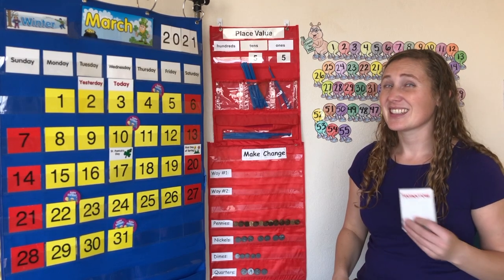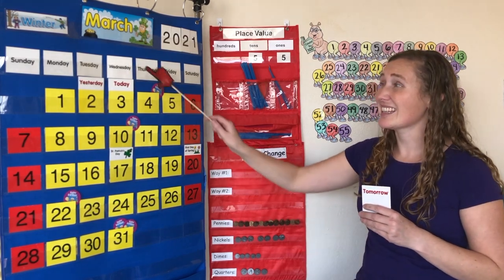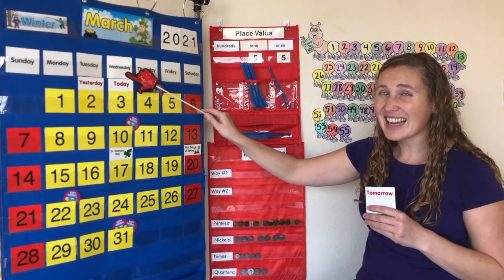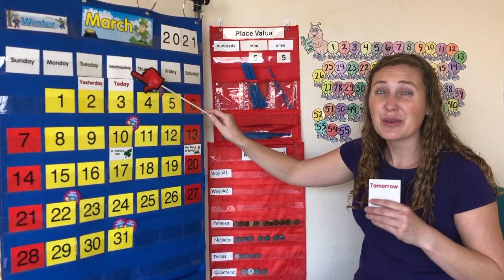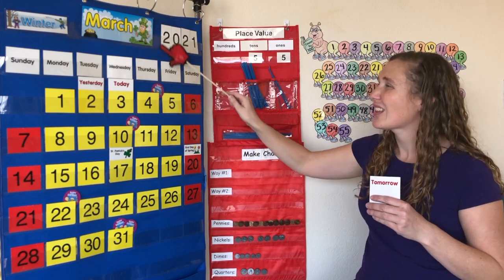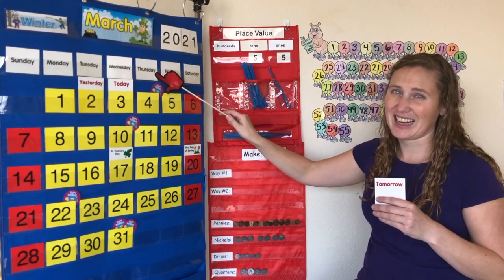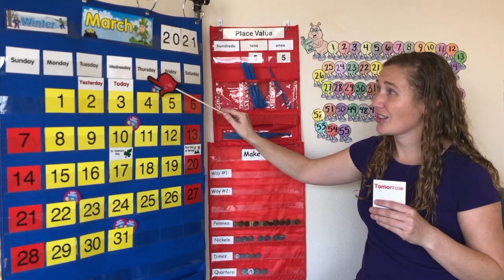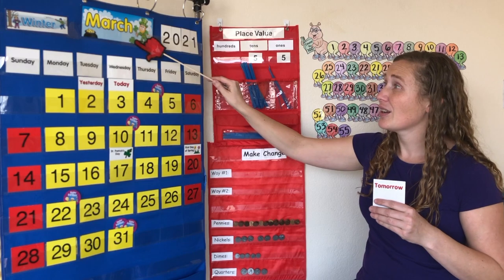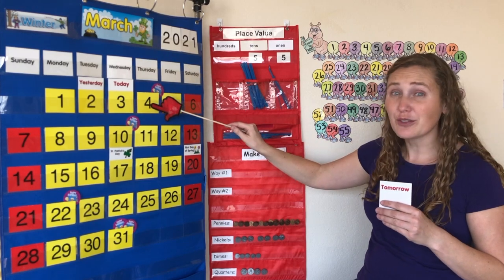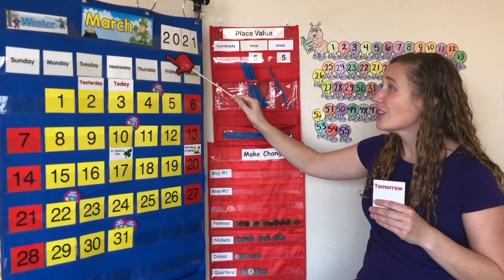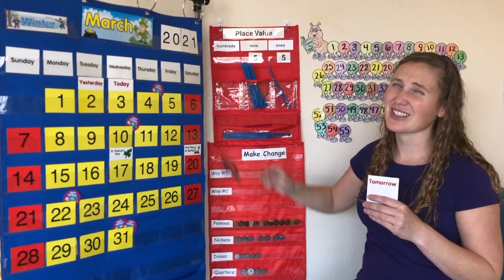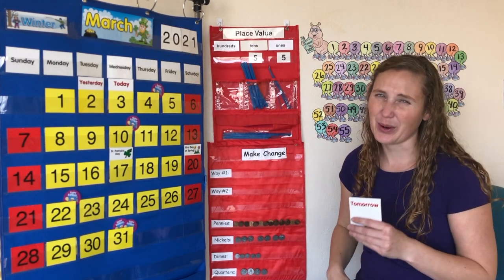What will tomorrow be? Today is Wednesday, so tomorrow will be Thursday. Tomorrow is Thursday, March 4th, 2021.